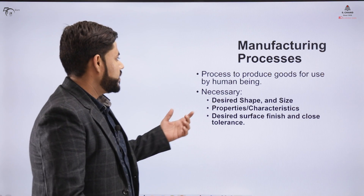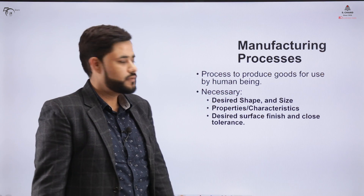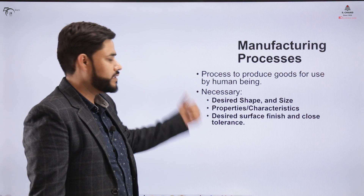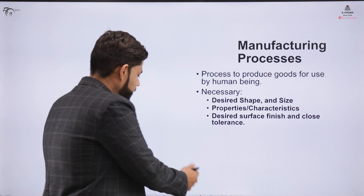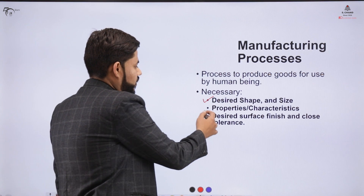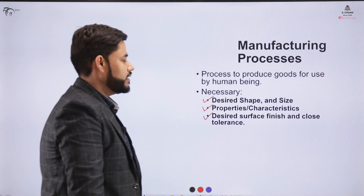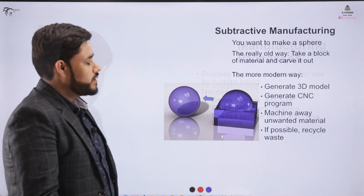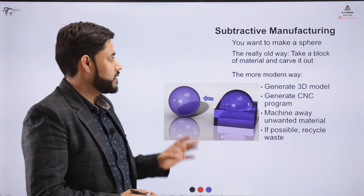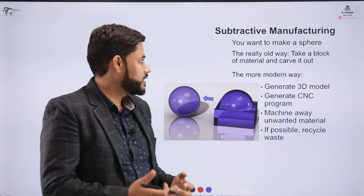Manufacturing process is a process to produce goods for use by human beings. We want to process goods for obtaining the desired shape and sizes, for the desired properties and characteristics, and for the desired surface finish and close tolerances. This is particularly called subtractive manufacturing.